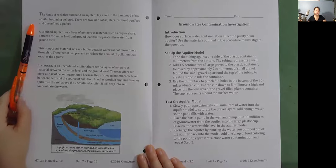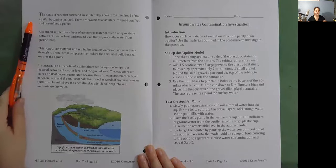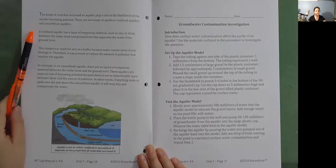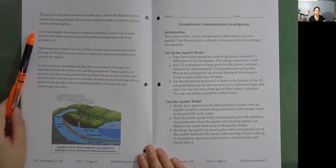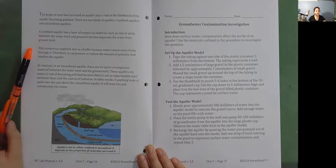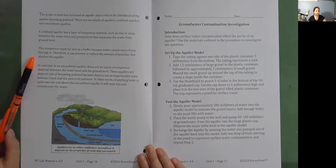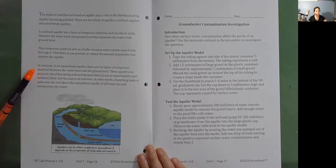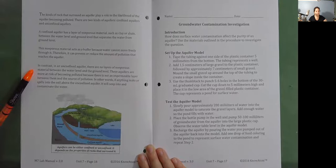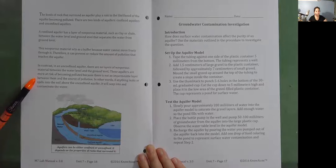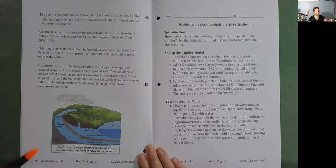The kinds of rock that surround an aquifer play a role in the likelihood of the aquifer becoming polluted. There are two kinds of aquifers, confined aquifers and unconfined aquifers. A confined aquifer has a layer of non-porous material, such as clay or shale, between the water level and ground level that separates the water from ground level. This non-porous material acts as a buffer because water cannot move freely through it. Therefore, it can prevent or reduce the amount of pollution that reaches the aquifer. In contrast, in an unconfined aquifer, there are no layers of non-porous material between the water level and the ground level. These aquifers are more at risk of becoming polluted because there is not an impermeable layer between them and the source of pollution. In other words, if anything leaks or spills into the soil above the unconfined aquifer, it will seep into and contaminate the water. Aquifers can be either confined or unconfined. It depends on the properties of rocks that surround it.